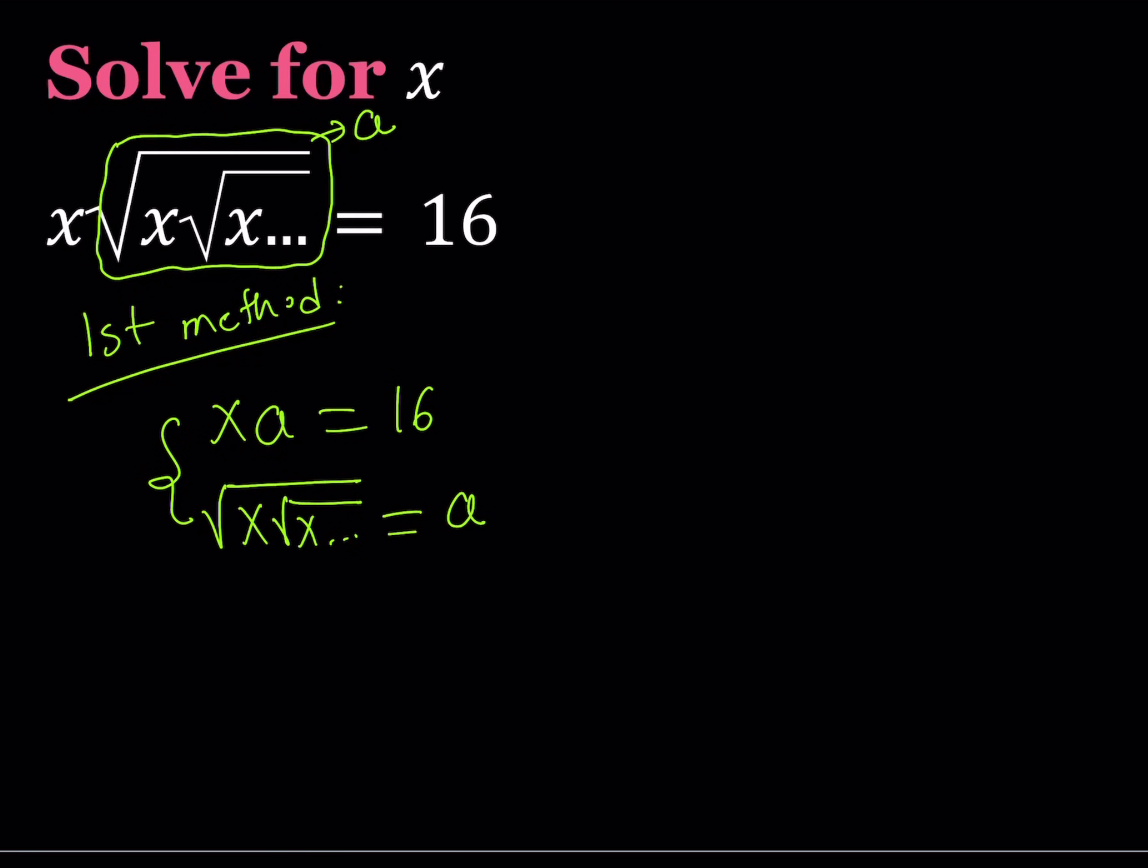Now, how do I solve this system? Well, I could probably replace, for example, here's one of the things you can do. There's a couple of routes you can take. For example, you can isolate a from here and write it as 16 over x. And you can just plug it in here and then proceed.